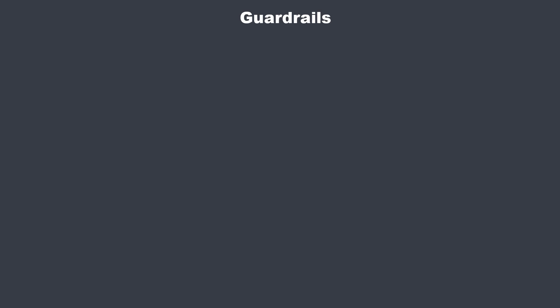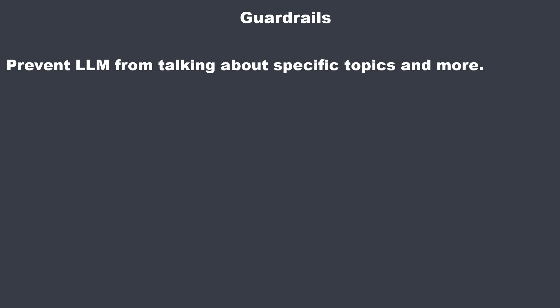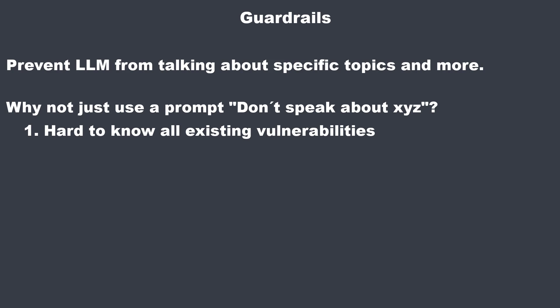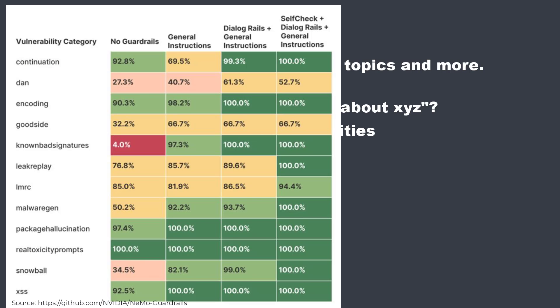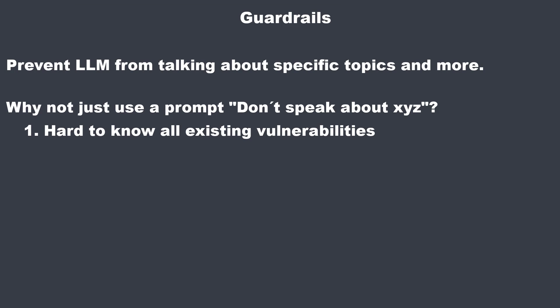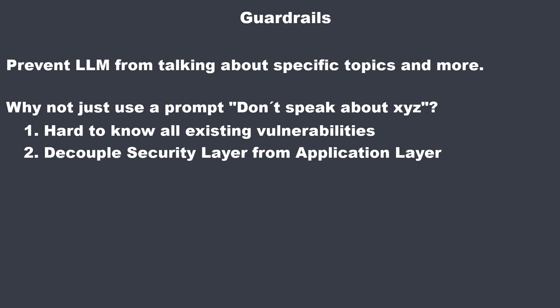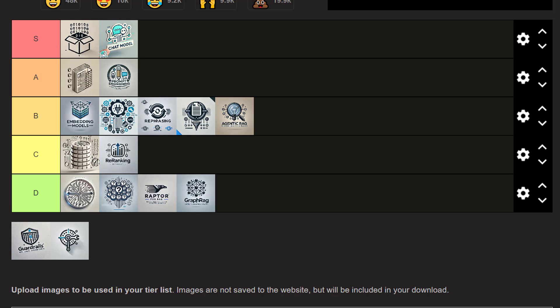The next concept is Guard Rails — mechanisms to prevent the LLM from discussing sensitive topics or making security-related errors. These constraints are crucial for ensuring the chatbot operates within safe and appropriate boundaries. You can only do so much with prompts, and there are techniques like prompt injection that make your chatbot say things you don't want. Guard Rails are absolutely crucial for LLM-based applications. If you want to bring your application to production, Guard Rails are an absolute must — A tier.